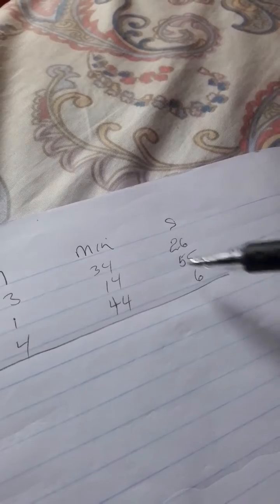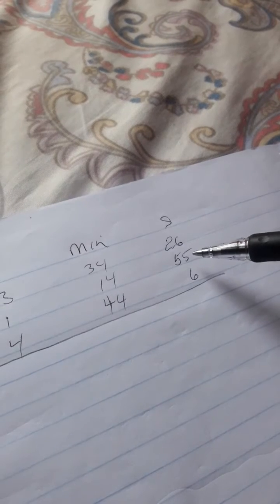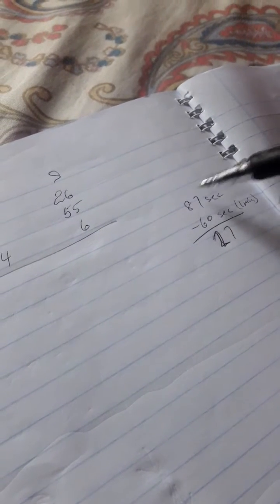Now, we know 60 seconds give you a minute. So if we get more than 60, we'll take 60 seconds out of this and put it over here as a minute. Now, we'll add up 26, 55, and 6. We end up with 87 seconds.